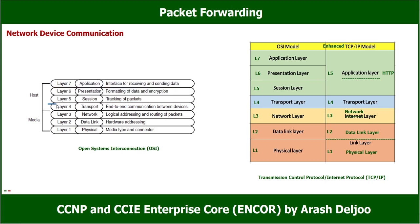In the transport layer we provide end-to-end communication between devices. In the TCP/IP model we have two transport layer protocols: TCP (Transmission Control Protocol) and UDP (User Datagram Protocol), which you learned about in CCNA and will learn in more detail here. For the network layer, the most important protocol is IP — IPv4 and IPv6 — along with some other protocols.